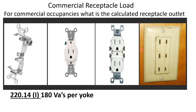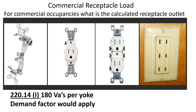Now let's check for demand factors. There are demand factors that are allowed to apply to a whole load calculation like this. Our question was just asking for how much per yoke, so we're not going to apply anything, but we'll learn in the next question how to apply the demand factor to this portion of the calculation. We select B.